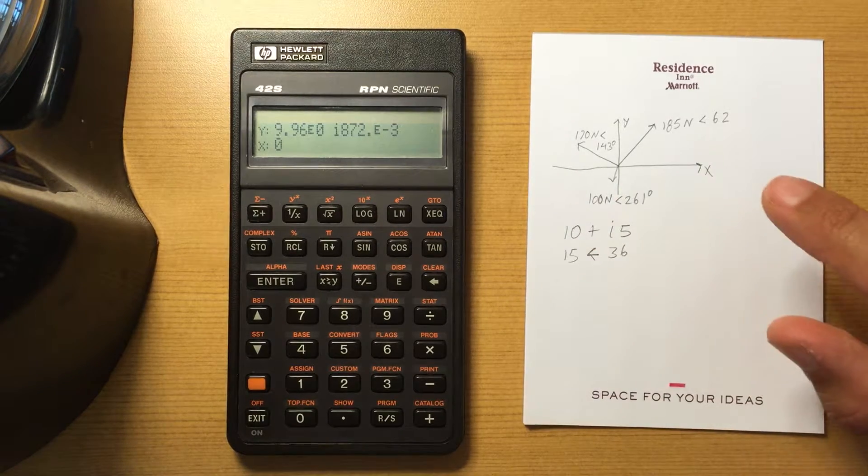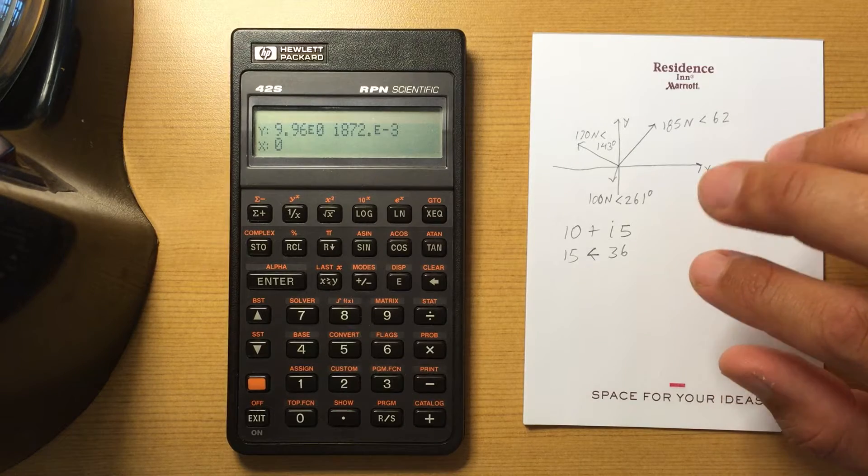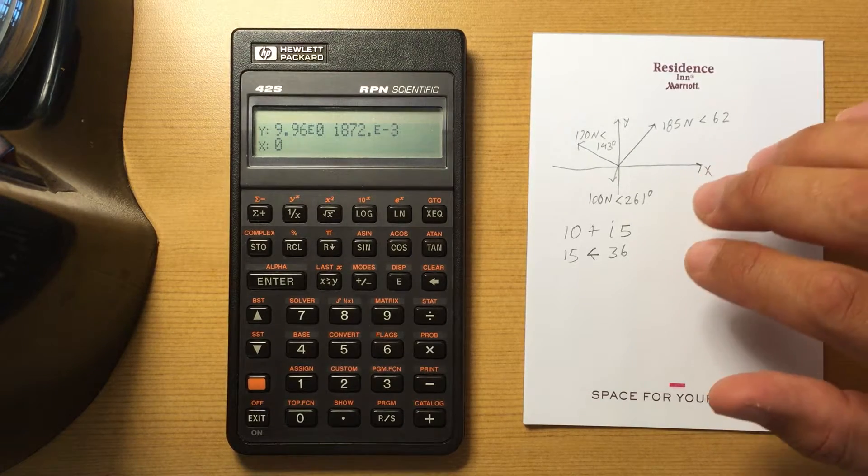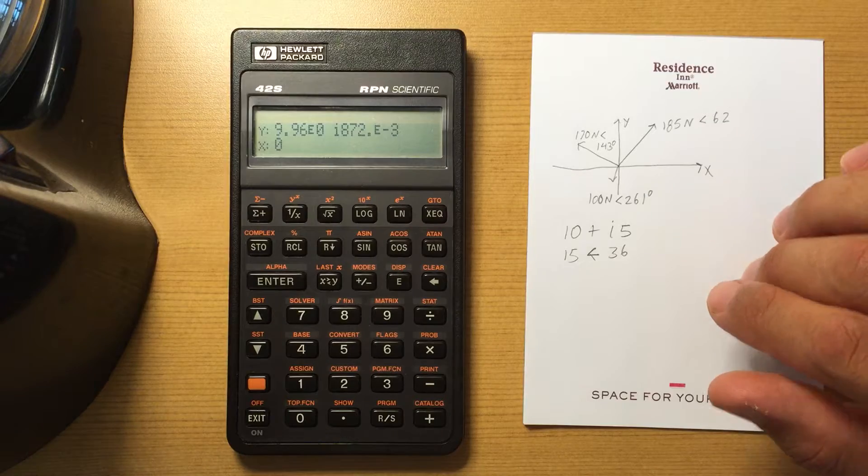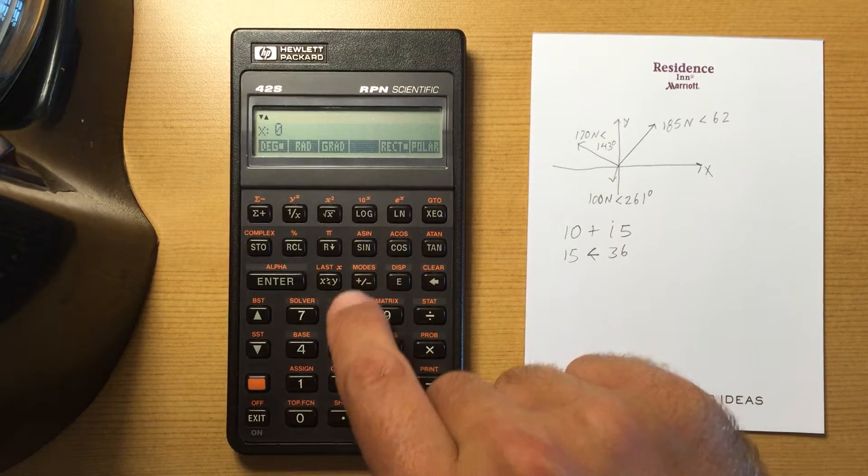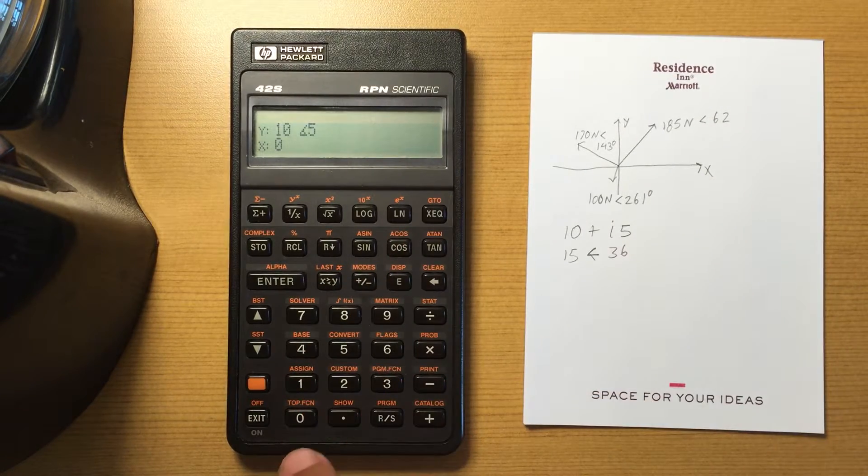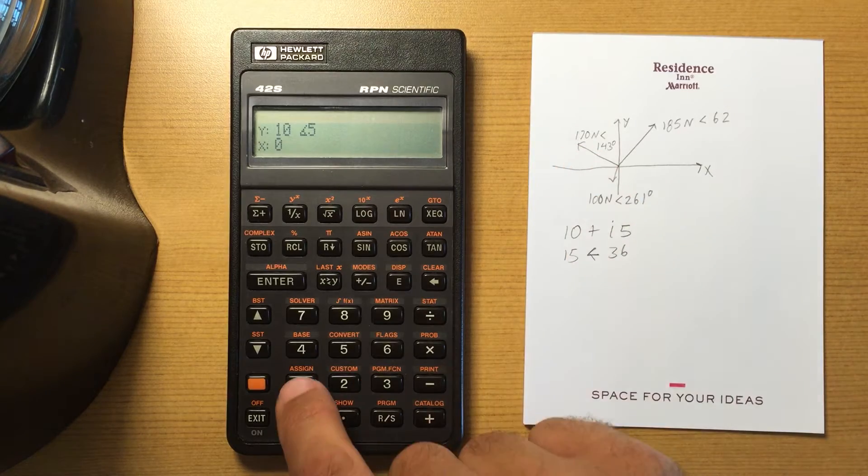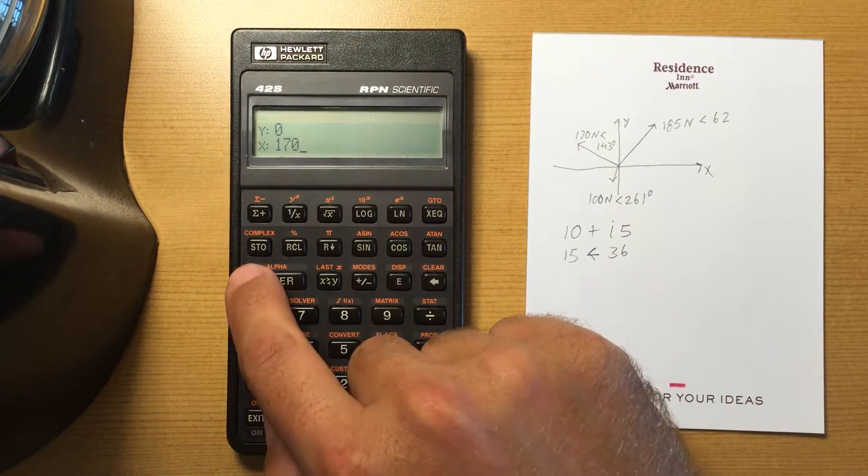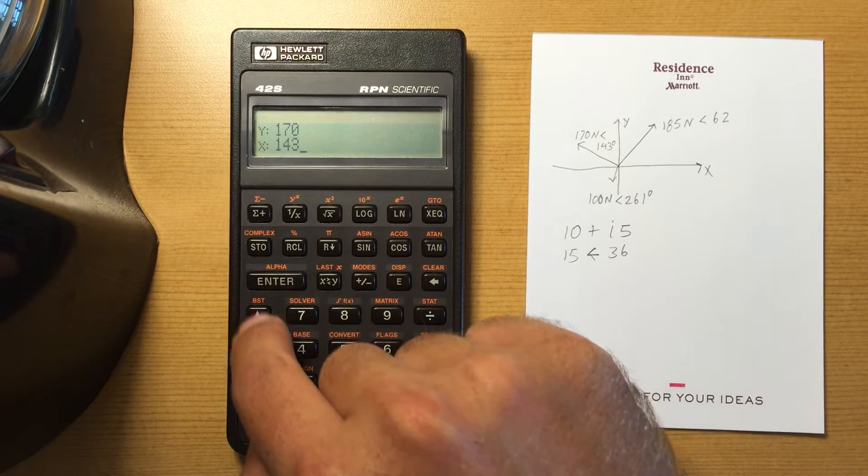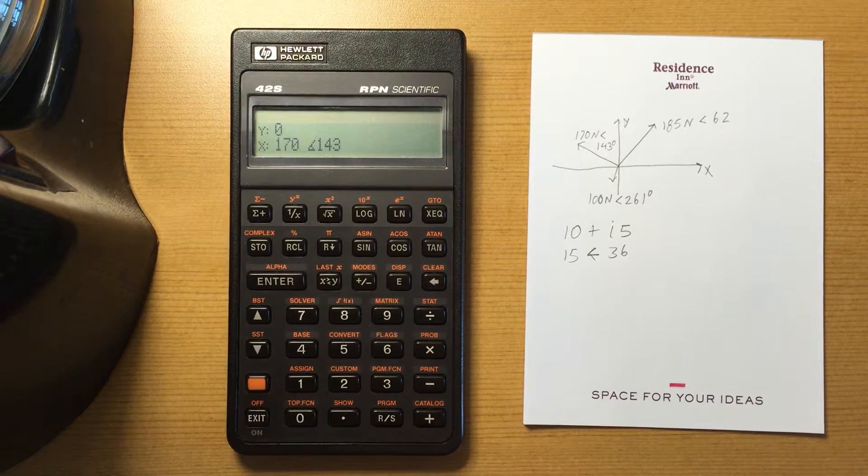Last thing is you can use it for figuring out problems with vectors, two-dimensional vectors. So I'm gonna change my mode to polar and enter these. So I have 170 at angle 143, that's complex.